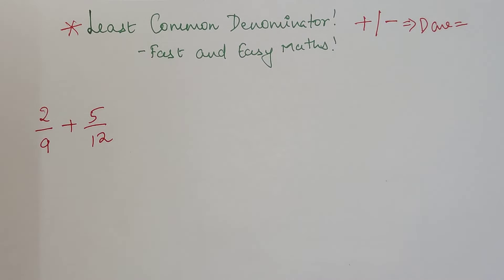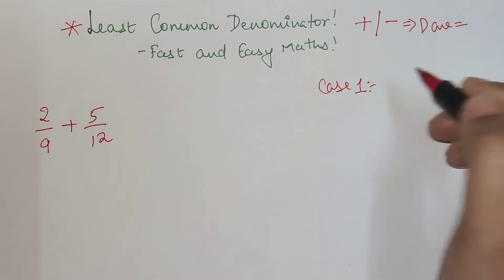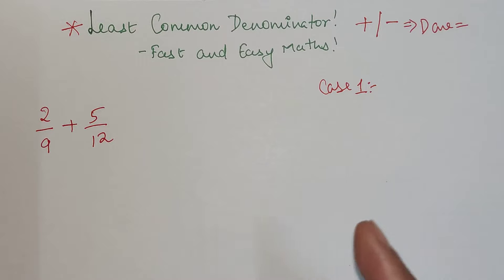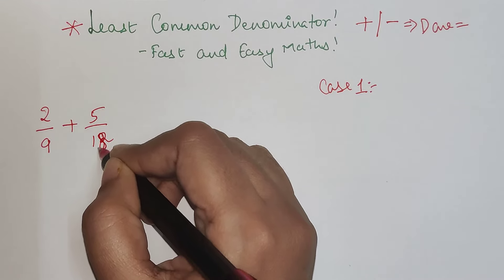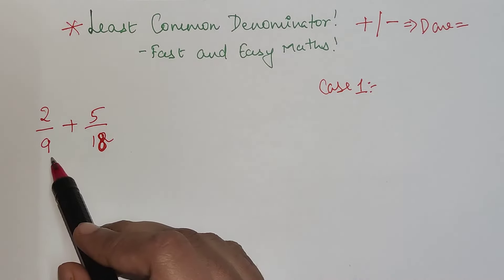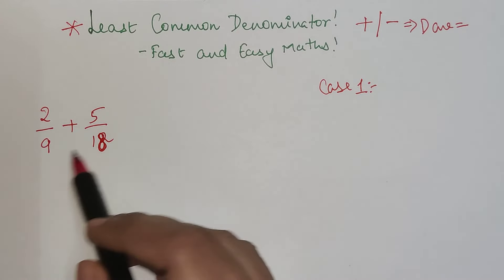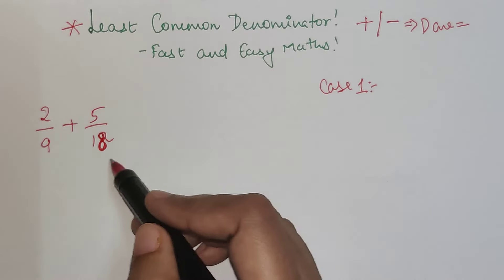This is very important, but before going ahead there are one or two cases. Case 1 is where one of the numbers is coming in another number's table. If here we had 18 instead of 12, I can say that 18 is coming in 9's table.